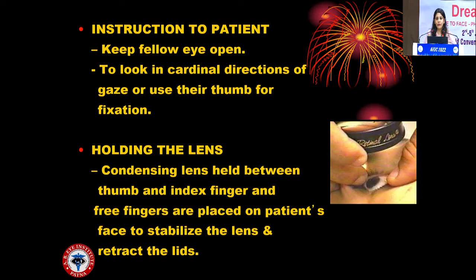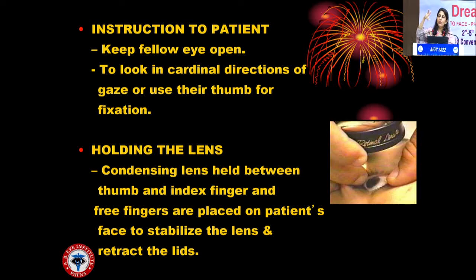Tell the patient in their language to keep the fellow eye open. Ask the patient to look in different cardinal directions or use their thumb for fixation — always with the fellow eye open, otherwise Bell's phenomenon forces the eye shut. The condensing lens is held between the thumb and index finger, and the free fingers are placed on the patient's face to stabilize the lens and retract the lid. Always remember that the three fingers act as a fulcrum and must rest on the patient's face — you cannot hold the lens with your hand in the air.